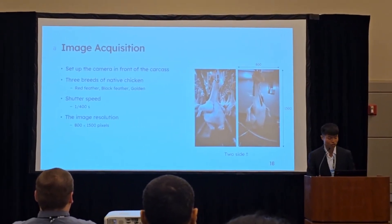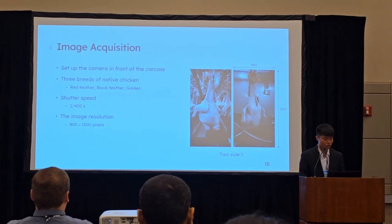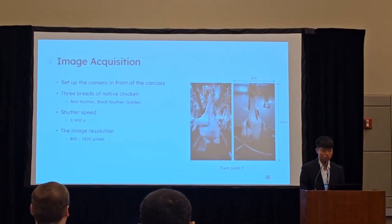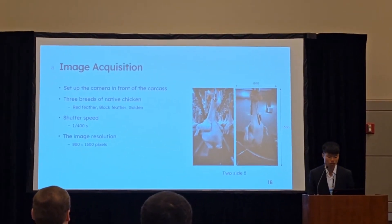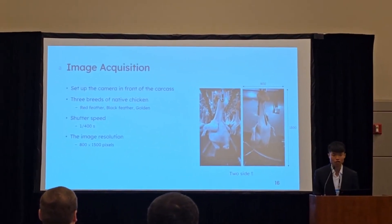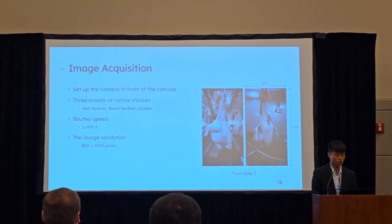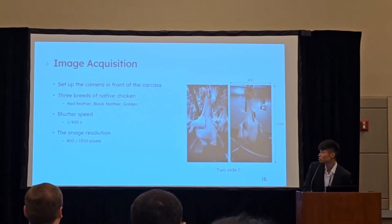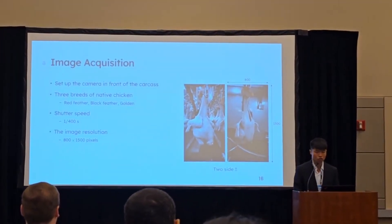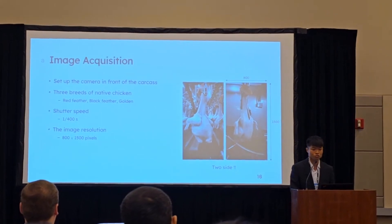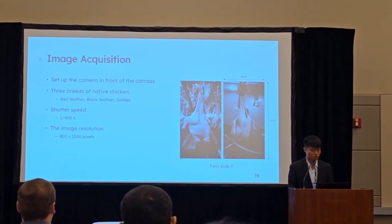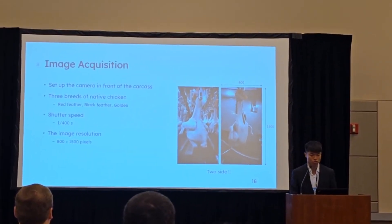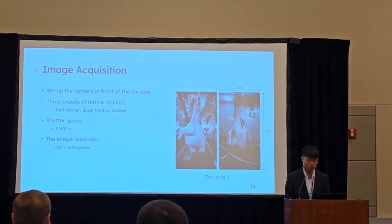Three breeds of native chicken carcass images were required, including the red-feathered native chicken, black-feathered native chicken, and golden chicken. The shutter speed of the camera was set to 1/400 seconds, and the image resolution is 800 by 1500 pixels.